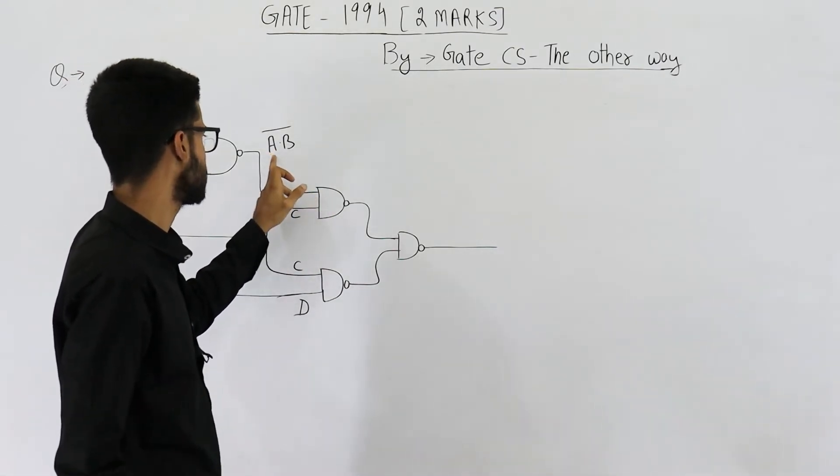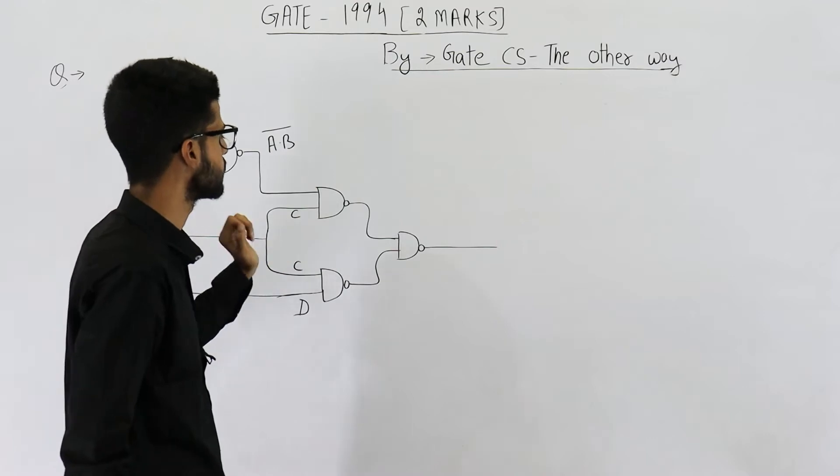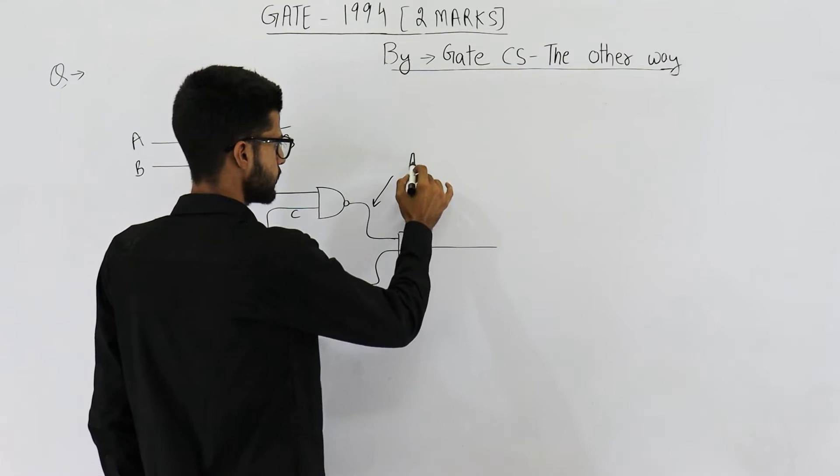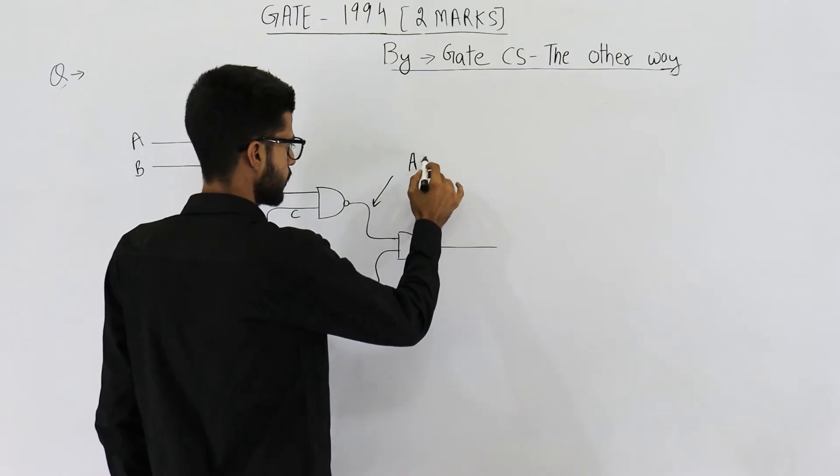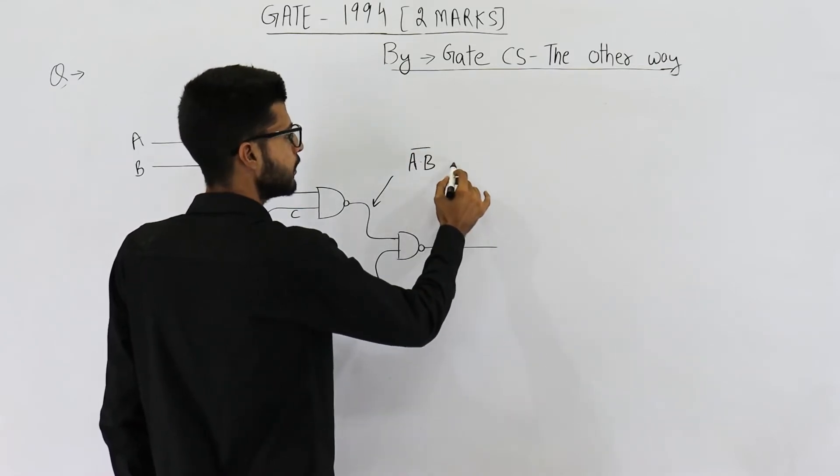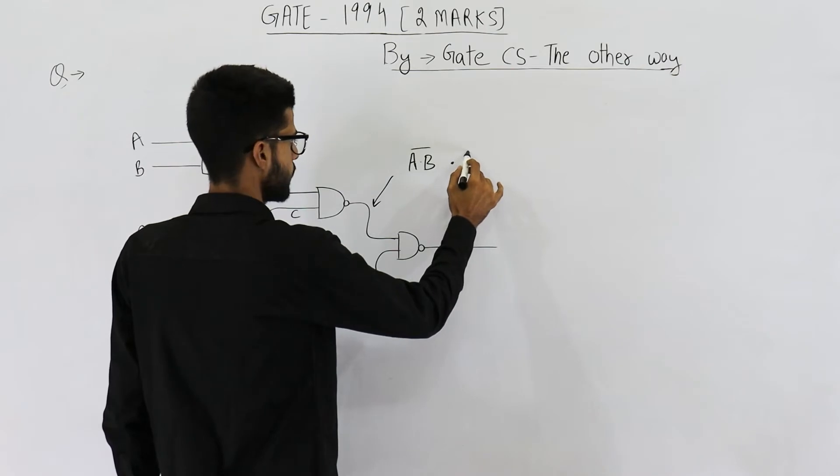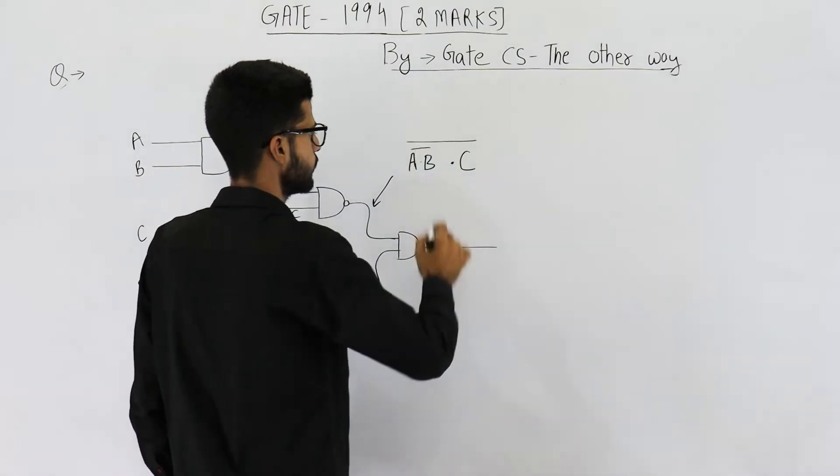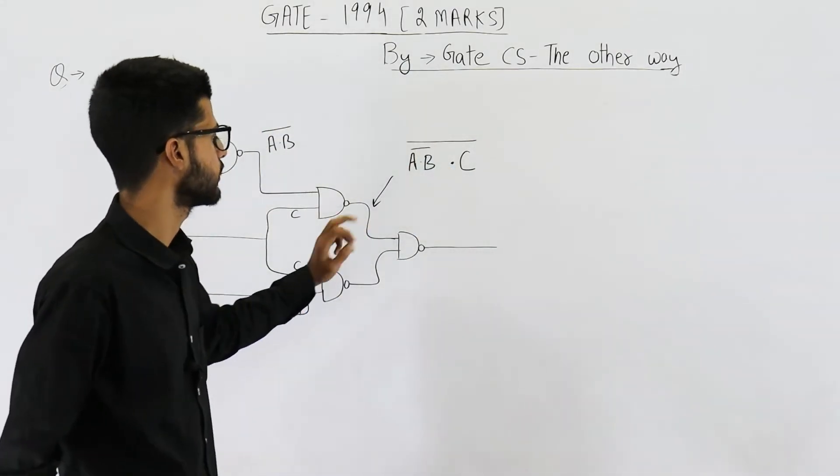Of this gate, first input is this, second input is this, so its output is going to be NAND of these two, that means a dot b complement and c. This much is AND. Now let's complement it to get NAND. Okay, so here we are getting this.